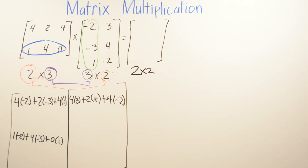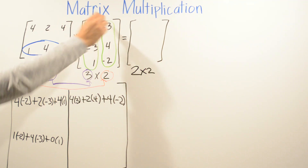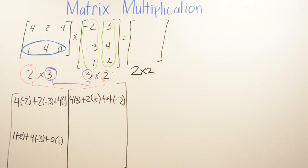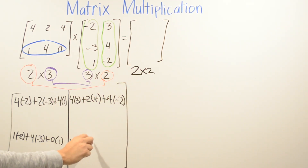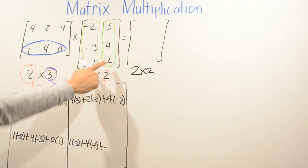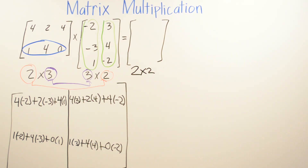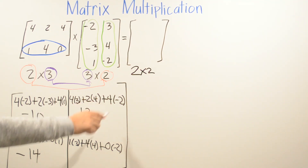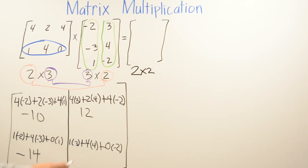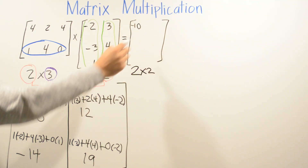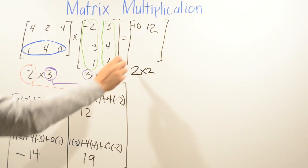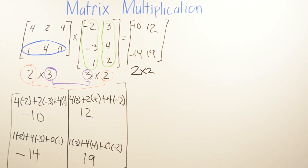For the bottom-right corner, we multiply the second row by the second column of the second matrix. When you multiply and add all the values, you get negative 10, negative 14, 12, and 19. The final 2 by 2 answer matrix is: negative 10, negative 14, 12, 19.